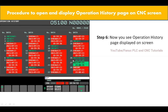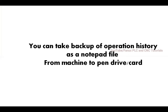You can also take a backup of this information as a notepad file from the machine to a pen drive or memory card. So how do you do that? You can take a backup of operation history as a notepad file from machine to pen drive or memory card.